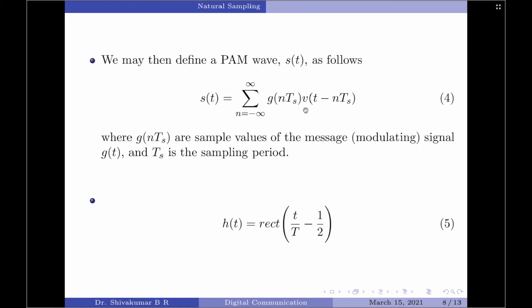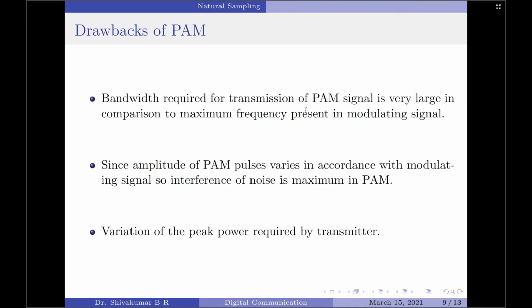That concludes the discussion on pulse amplitude modulation. Before ending, I would like to highlight some drawbacks of PAM. First, the bandwidth required for transmission of PAM signals is quite high, though this can be compensated by replacing the rectangular pulse with a standard pulse. Second, since the amplitude of PAM signals can take any value, interference of noise is quite high. Lastly, the variation of peak power required by the transmitter is also a drawback of the PAM technique.